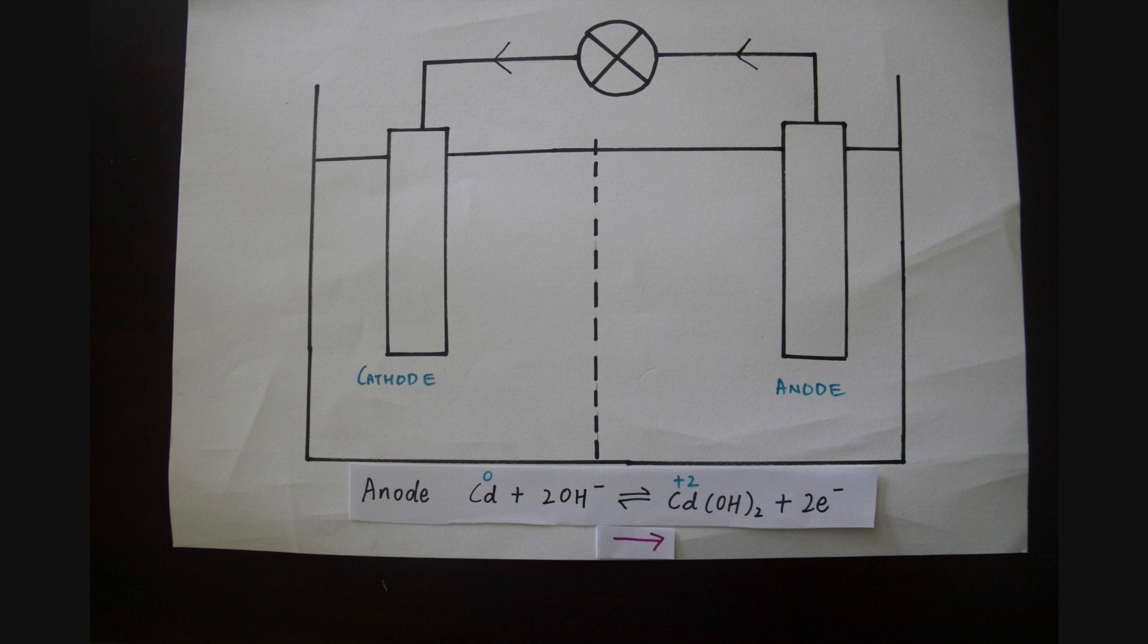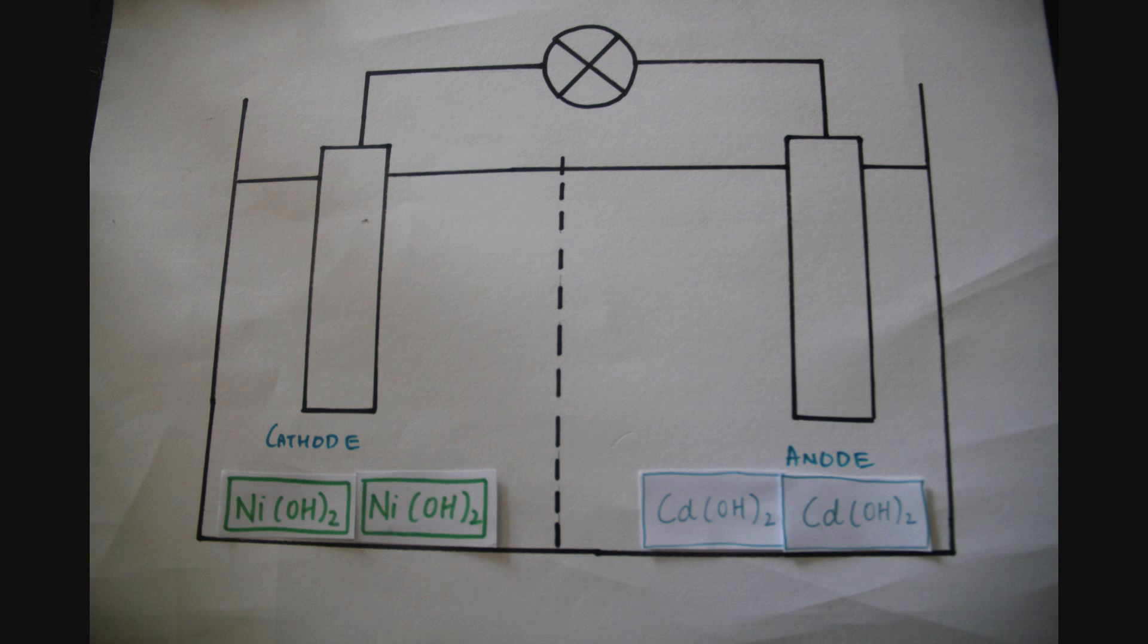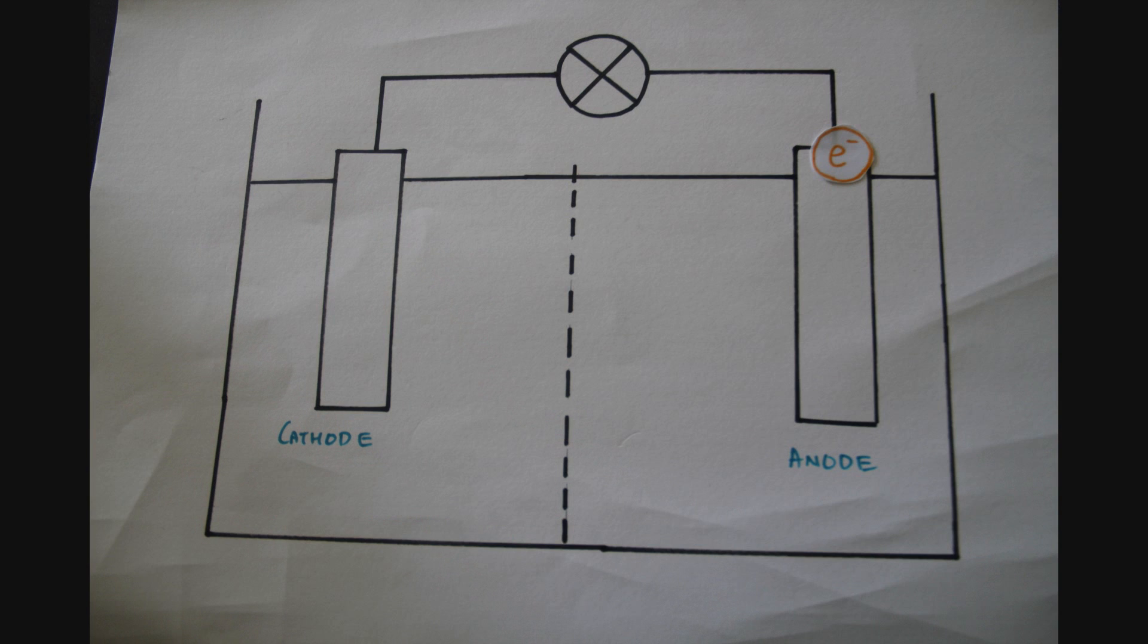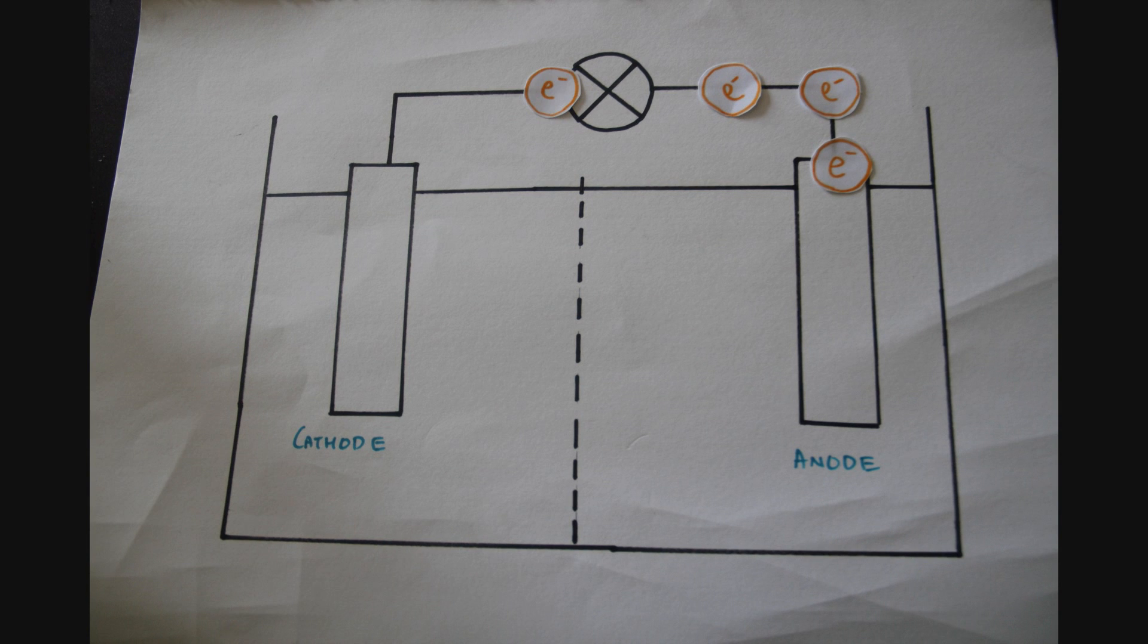At the same time, the cathode goes through a reduction reaction, in which nickel oxide hydroxide and free electrons combine to form nickel hydroxide. In simpler terms, the reaction in the anode produces electrons and the reaction in the cathode absorbs them. The net product is electricity.